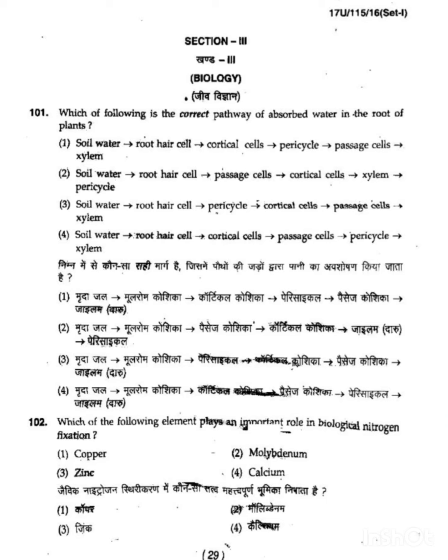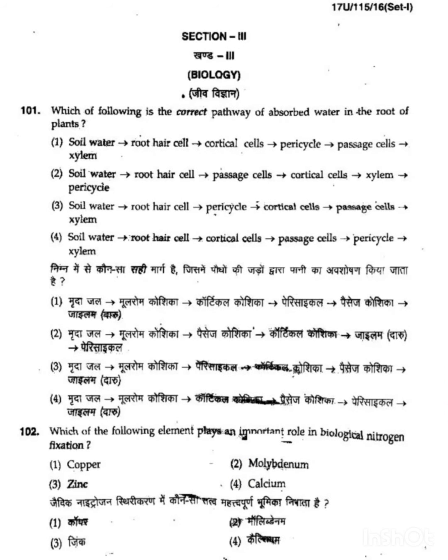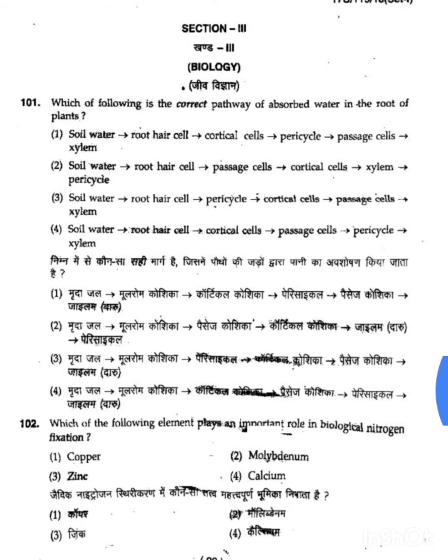Let's start biology, which is the third section of this paper. Our first question is question number 101: Which of the following is the correct pathway of absorbed water in the root of plants? We need to tell the correct pathway of water absorbed by roots.